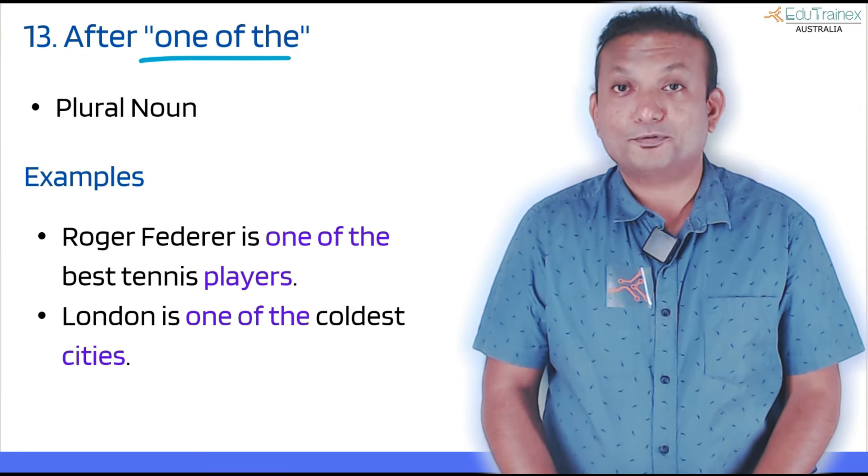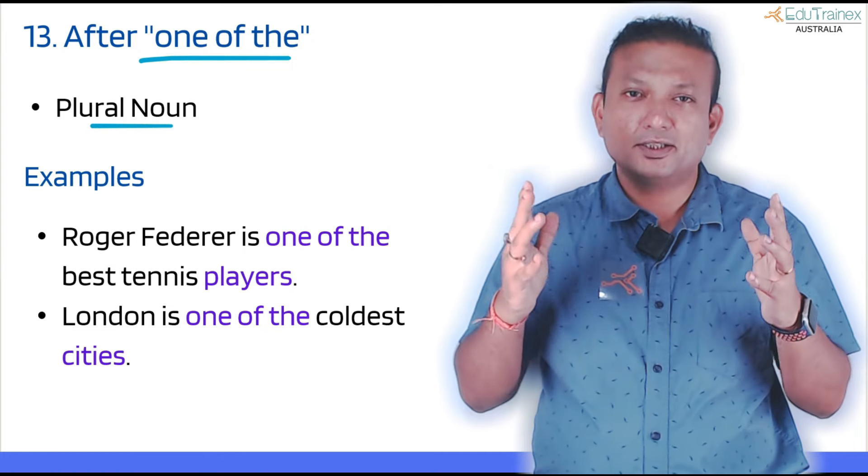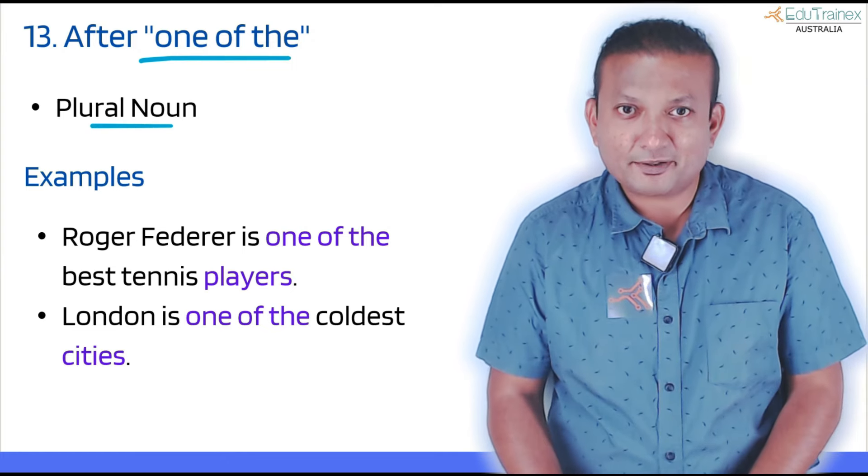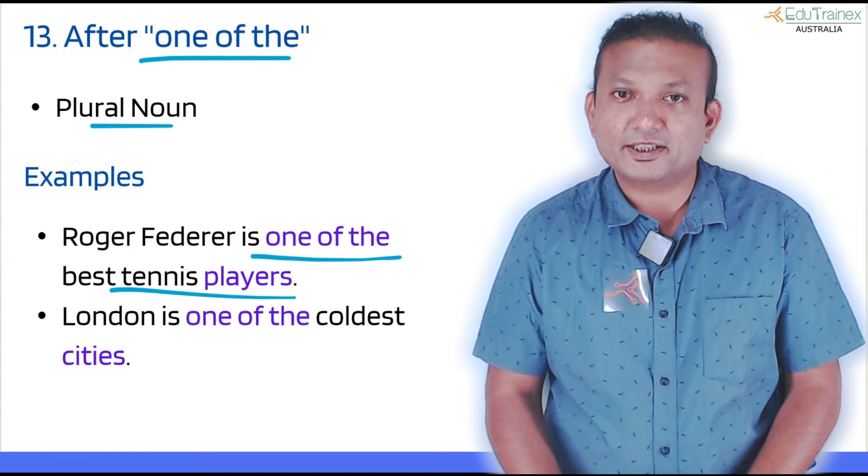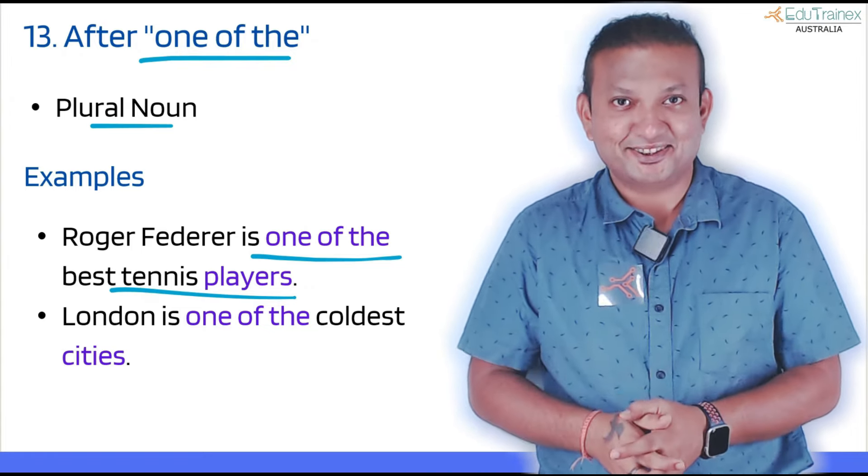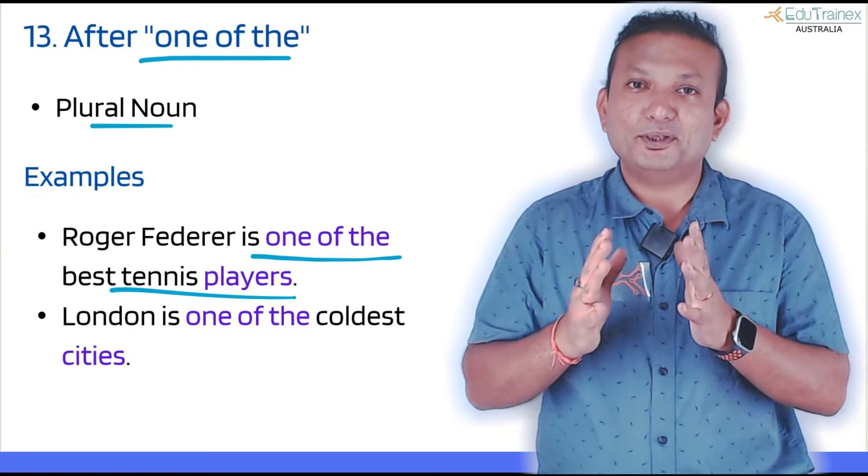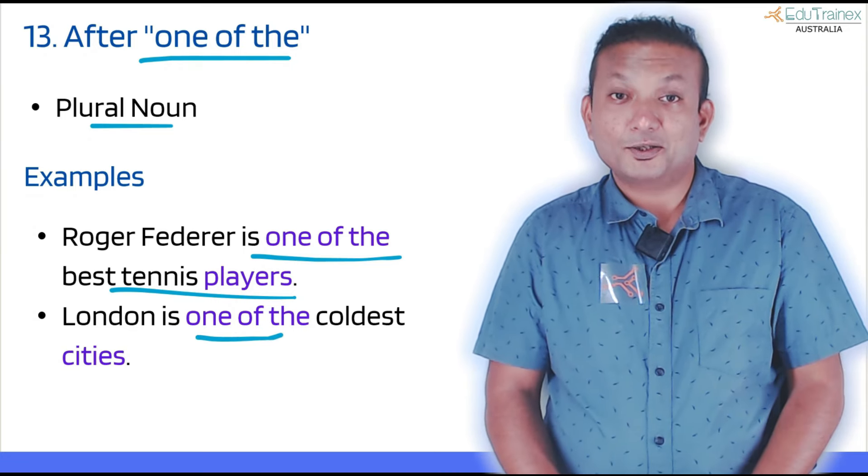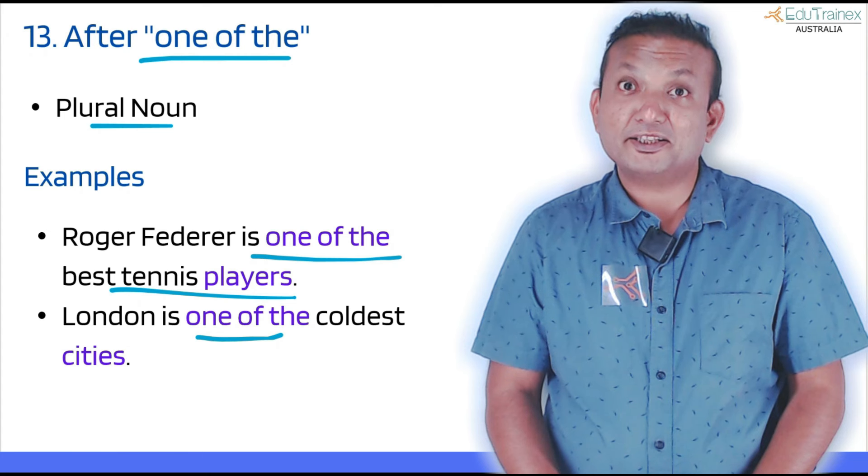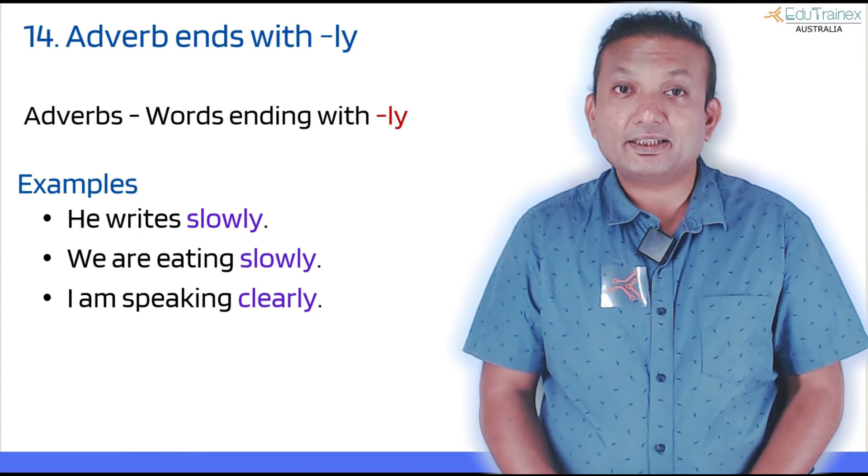Let's move on to the last set of grammar techniques. After 'one of the,' what comes? After 'one of the,' plural noun. 'One of the best tennis players,' see the example that I've shown here. 'One of the best tennis players,' 'one of the best singers,' 'one of the best video makers.' All these kind of 'one of the something,' and then it will be a plural noun. So 'one of the coldest cities.' London is one of the coldest cities in the world. Everyone knows that.